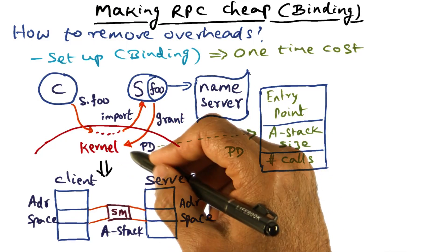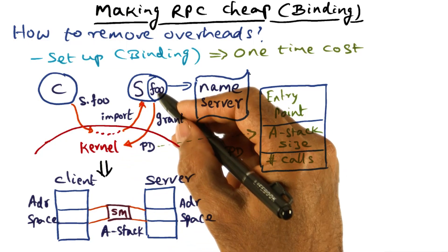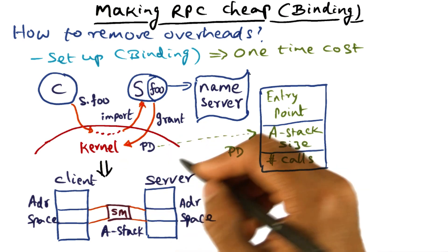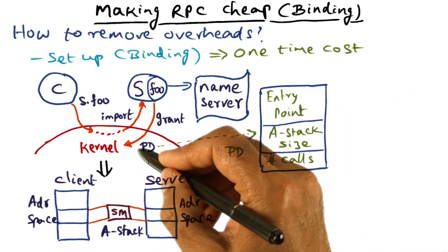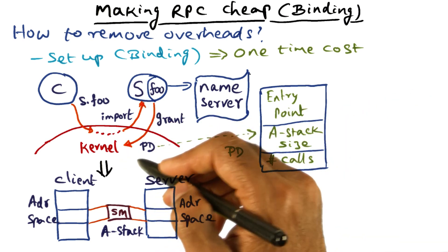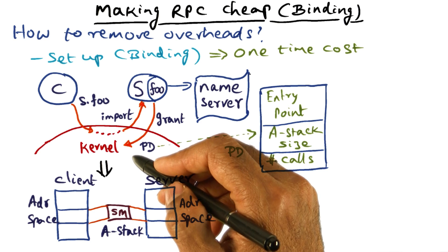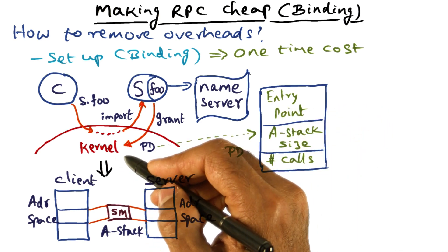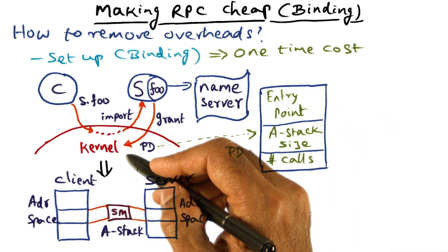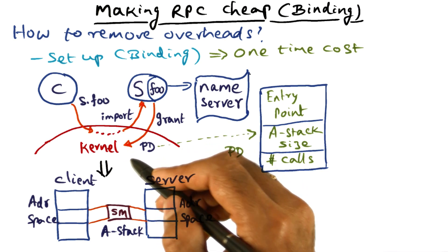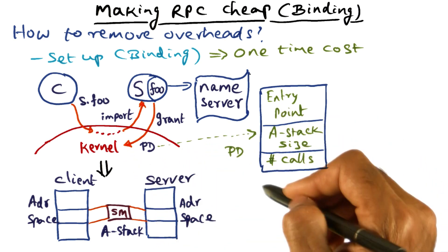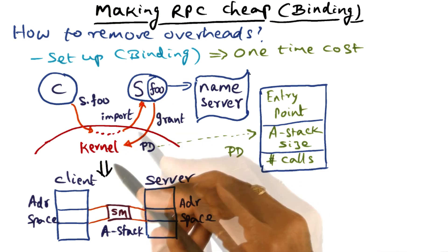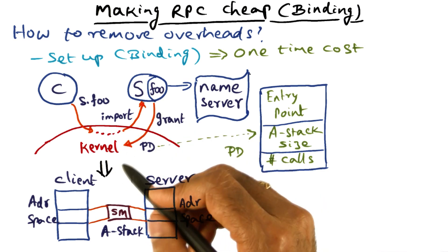Once the kernel gets all this information from the server, the kernel gets to work. First of all, it creates a data structure on behalf of the server and holds it internally for itself. This data structure is entirely in the kernel — nobody else has to see it. It is only for the kernel to know all the information needed in order to make this up-call into the entry point procedure.